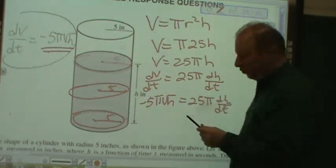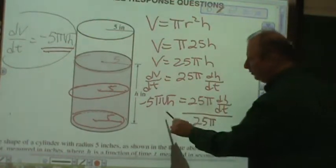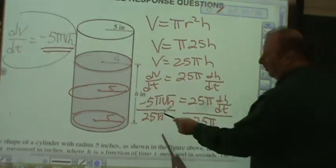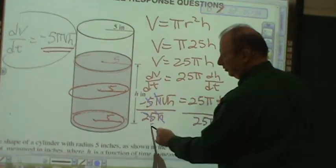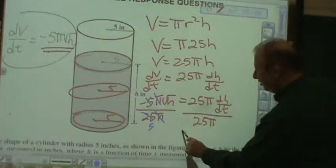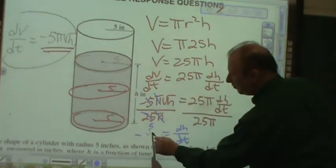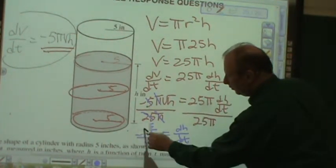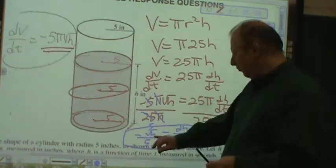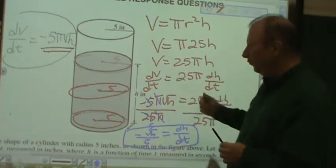Of course, if I use my Algebra 1 skills, divide both sides by 25π. Of course, I'm going to simplify. So now, dh/dt is equal to negative √h over 5. And that's what the question is. Prove that dh/dt is negative √h over 5. We just did that.